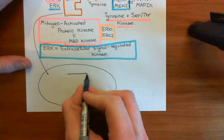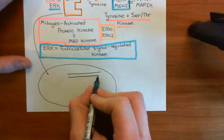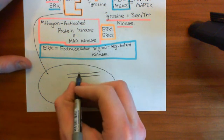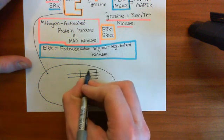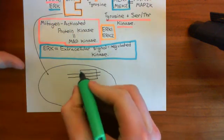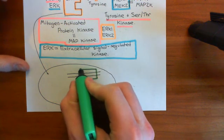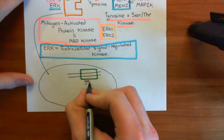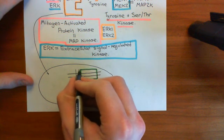Before I show you which transcription factors it's going to phosphorylate, let me remind you of the basic principle of what a transcription factor is. Let these two lines here represent a piece of double-stranded DNA. Let's say that this region of the double-stranded DNA — which I'm now boxing and highlighting in green — represents a gene.